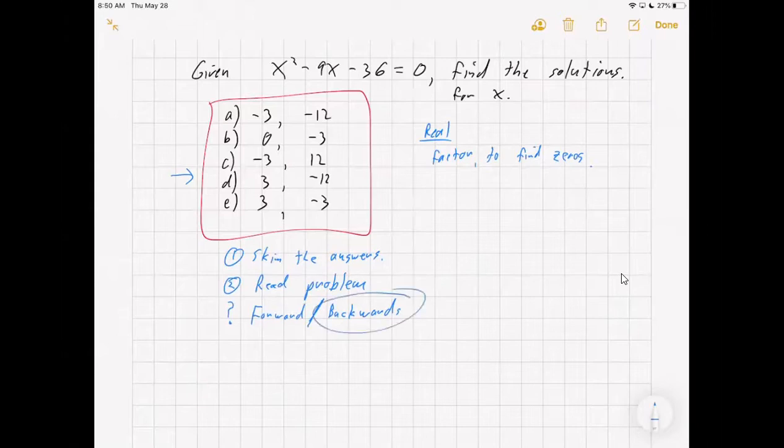So this backward strategy could work if you forgot how to factor, or you just determine that it's faster. In this case, it might be faster to use the answer to go backwards. So how do you go backwards? You PITA, and this does not mean take a snack break with PITA chips in the middle of the test. It stands for plug in the answers. A more mathematical term for plug would be substitute in the answers into the question and see if they make it true.